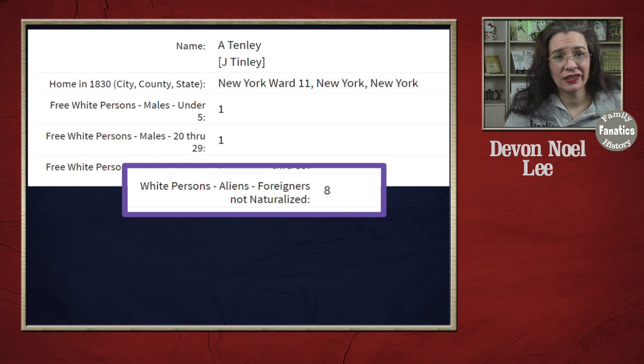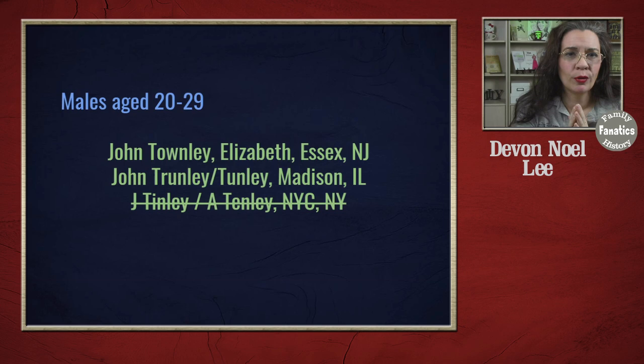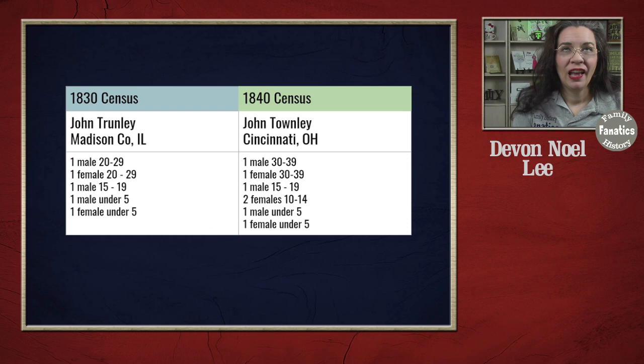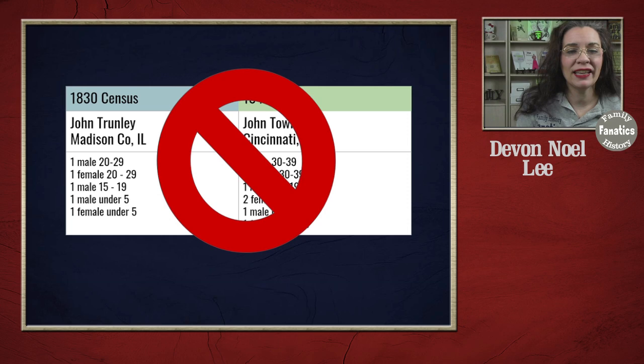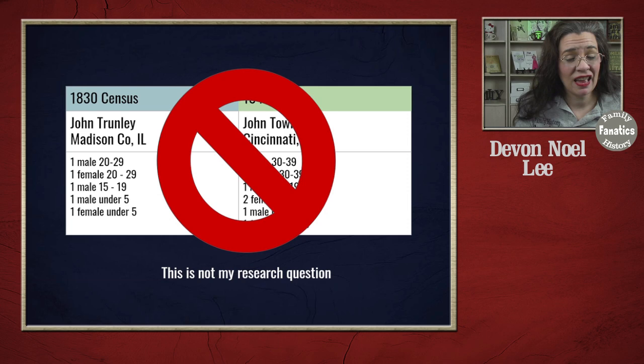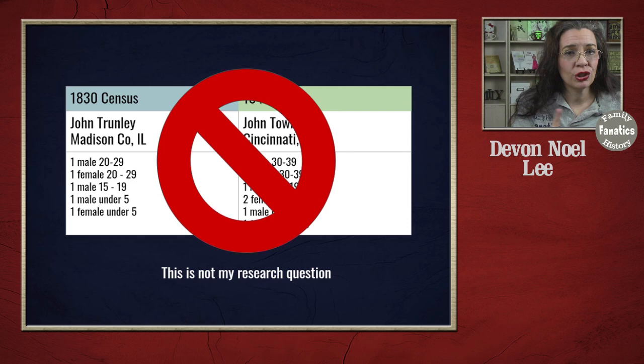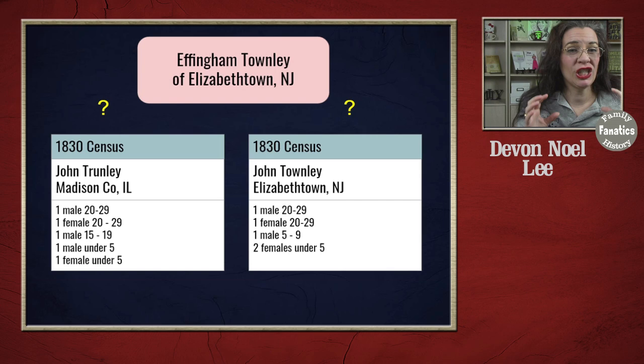Initially when I did my same name rule out method, I discounted the Madison, Illinois John because his family structure didn't align with the 1840 John Townley in Cincinnati. In other words, I was trying to prove the relationship between John of Cincinnati and John in 1830, rather than first asking who could be the son of Effingham Townley, and then whether that likely son matches the John in Cincinnati. So be careful which way you're running your thought process and which assumptions you're working under to ensure you are actually doing the research you think you're doing.